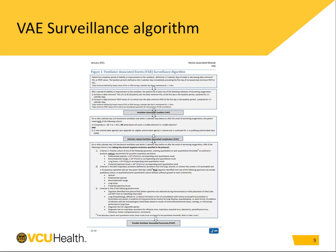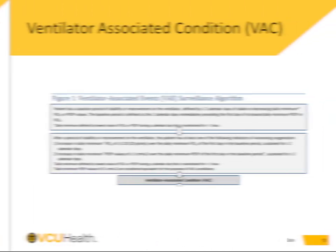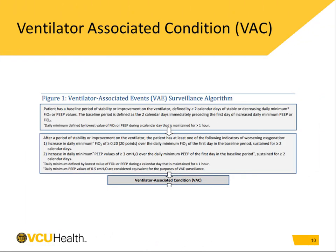You can see it is designed in a stepwise fashion. A patient must meet criteria for VAC to meet criteria for IVAC, and meet IVAC criteria to qualify for PVAP. To meet criteria for VAC, a patient must: one, be on a vent for two days; two, be on a stable vent setting for two days, looking at the lowest value of FiO2 or PEEP during a calendar day maintained for greater than one hour. Then they must have either an increase in the daily minimum FiO2 of greater than 20 points sustained for two or more days, or an increase in the daily minimum PEEP values of greater than three sustained for two or more days.